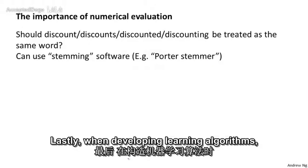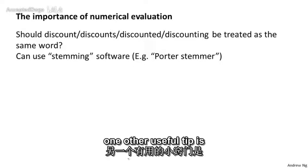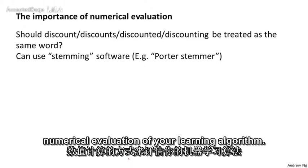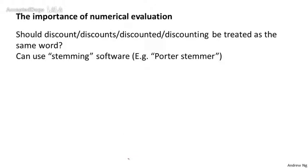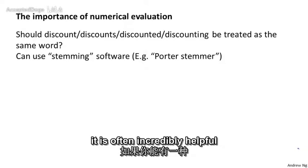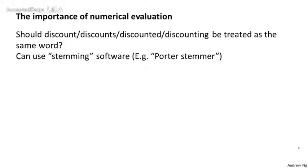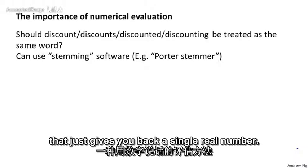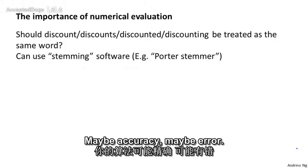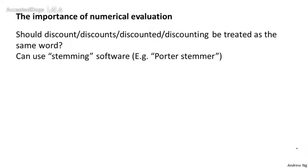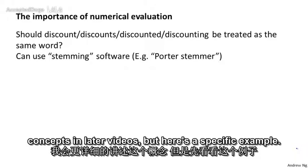Lastly, when developing learning algorithms, one other useful tip is to make sure that you have a way, you have a numerical evaluation of your learning algorithm. And what I mean by that is that if you're developing a learning algorithm, it's often incredibly helpful if you have a way of evaluating your learning algorithm that just gives you back a single real number—maybe accuracy, maybe error—but a single real number that tells you how well your learning algorithm is doing. I'll talk more about this specific concept in later videos, but here's a specific example.